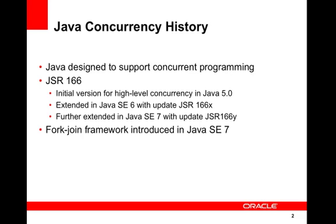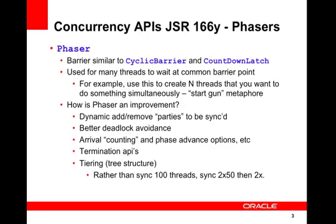This is also the first introduction of the fork-join framework in Java SE 7. Looking at the concurrency APIs, let's take a look at phasers. A phaser is a reusable synchronization barrier, very similar in functionality to the cyclic barrier and the countdown latch, but it supports much more flexible usage.